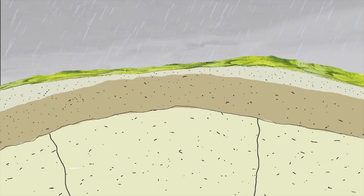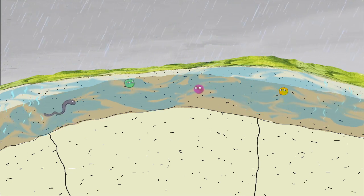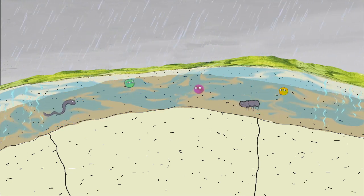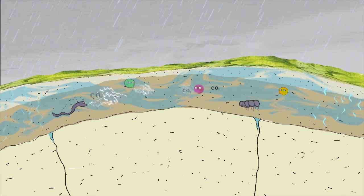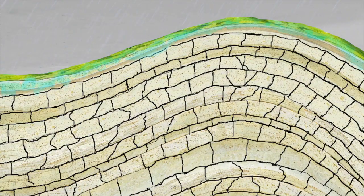Before reaching the rock, rainwater, already full of carbon dioxide naturally present in the atmosphere, will pass through a first layer of earth filled with creatures such as earthworms, insects and bacteria, all of which breathe, like you and I, and also emit carbon dioxide.